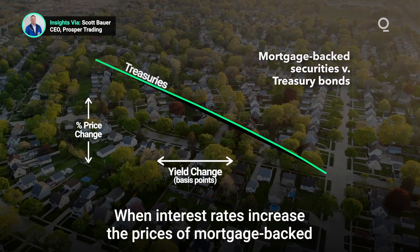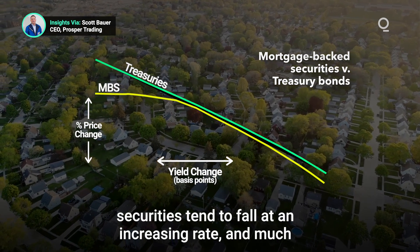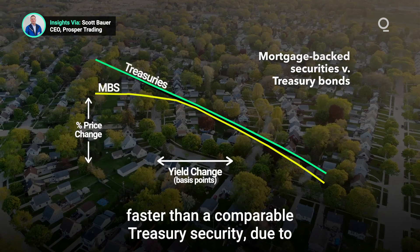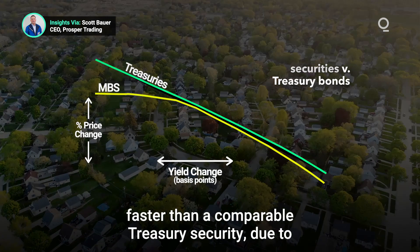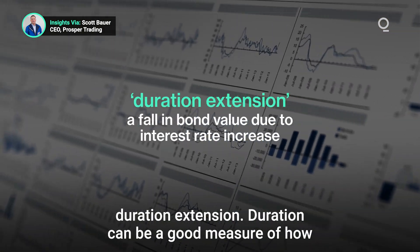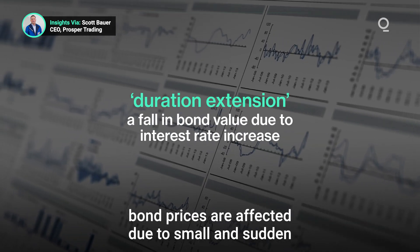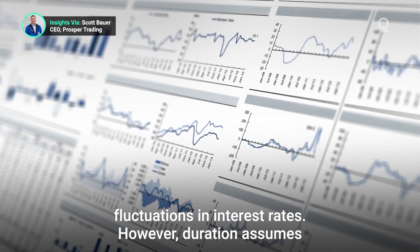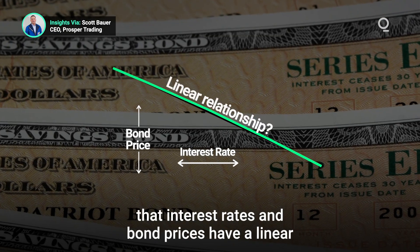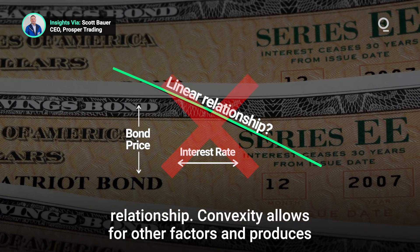When interest rates increase, the prices of mortgage-backed securities tend to fall at an increasing rate and much faster than a comparable treasury security, due to duration extension. Duration can be a good measure of how bond prices are affected due to small and sudden fluctuations in interest rates. However, duration assumes that interest rates and bond prices have a linear relationship.